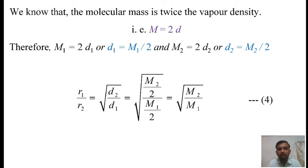We know that the molecular mass is twice the vapor density, that is M equals twice D. Therefore, for gas 1, M1 becomes twice D1, and for gas 2, M2 becomes twice D2. Or we can say that D1 equals M1 upon 2 and D2 equals M2 upon 2. Substituting the values of D1 and D2 in equation 3, we get expression number 4: R1 upon R2 equals square root of M2 upon M1.